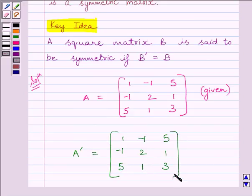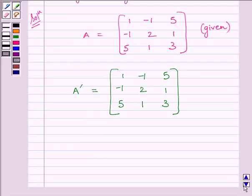Now we can see A and A transpose both are exactly same. So this implies A is equal to A transpose.